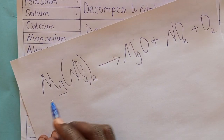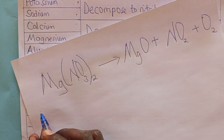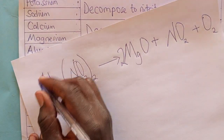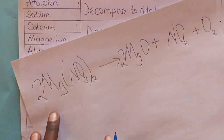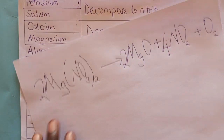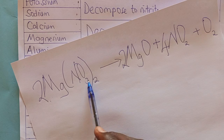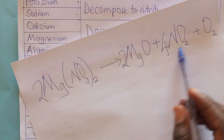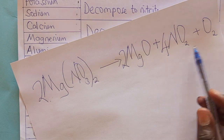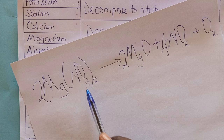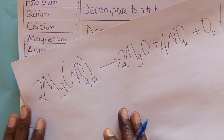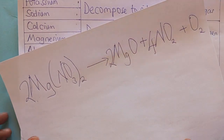If we are to balance this equation, we put a 2 in front of magnesium nitrate and a 2 in front of the nitrogen dioxide, and we also need a 4 there to balance the oxygens. The equation is balanced. This is just an example using magnesium.